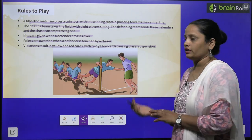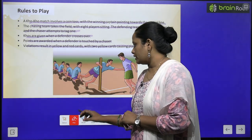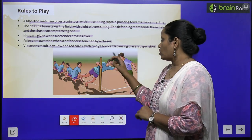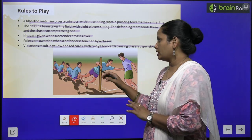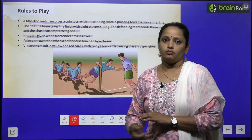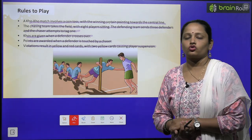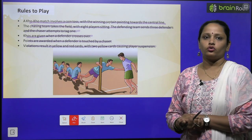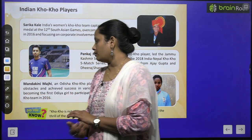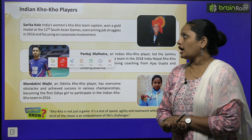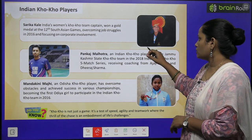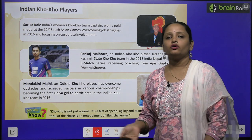Two yellow cards cause a player suspension, so no other player from that team will play. Players must face the opposite side, and the opponent team members alternate facing front and back. So this is how the Kho Kho game is played. Now let's learn about Indian Kho Kho players.